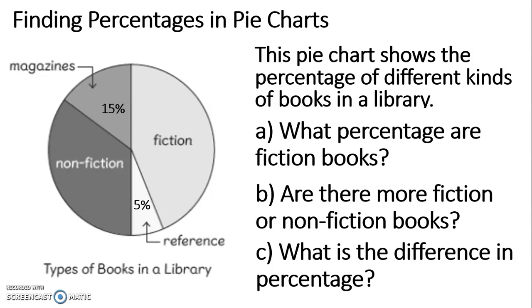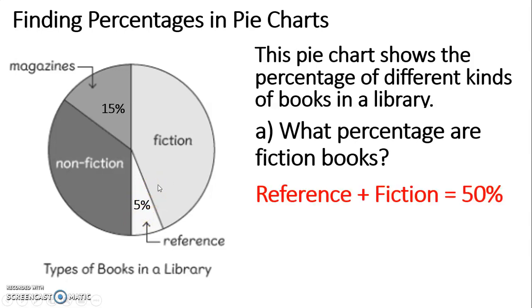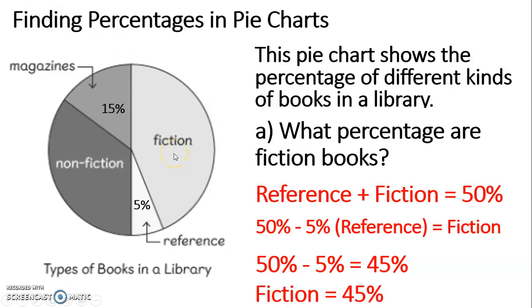If you'd like to solve this yourself, you should pause the video now. I'm going to talk through the steps that we can use to solve A, B and C. Let's start with A. We know that the reference books and the fiction books together make up half of the pie chart. Half a pie chart is 50%, so reference plus fiction equals 50%. That means if we subtract the 5% of reference books from the 50%, we will get the amount that are fiction books. 50% subtract 5% is 45%, so the fiction books must be 45% of the books in that library.